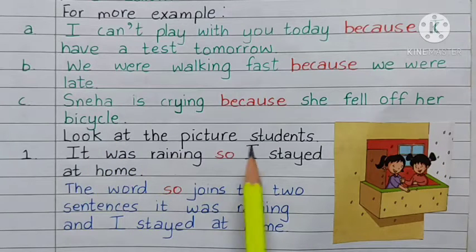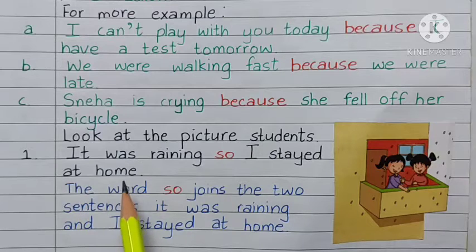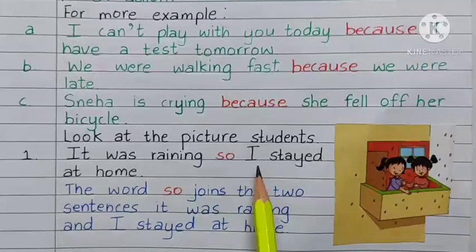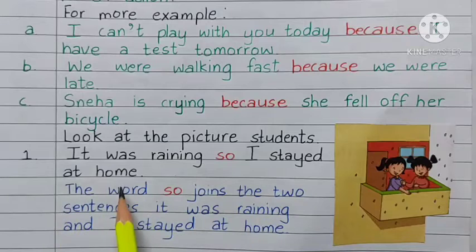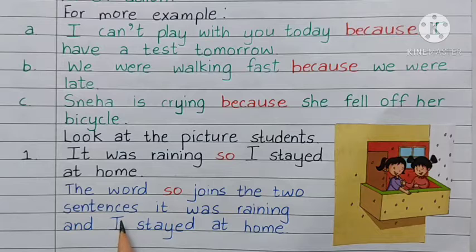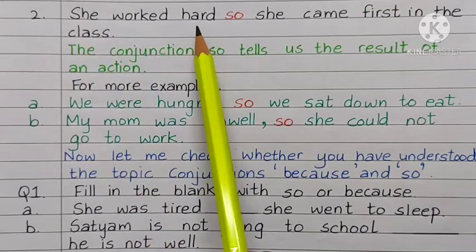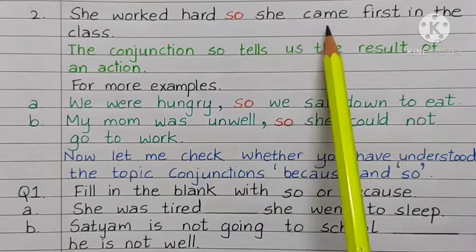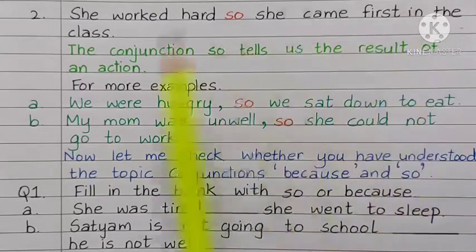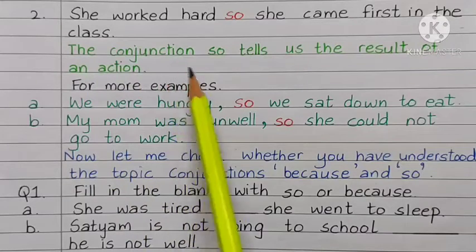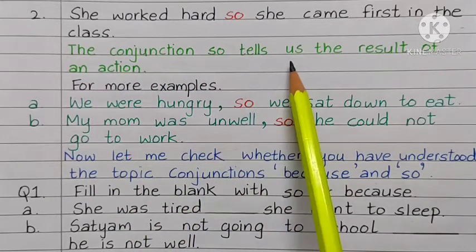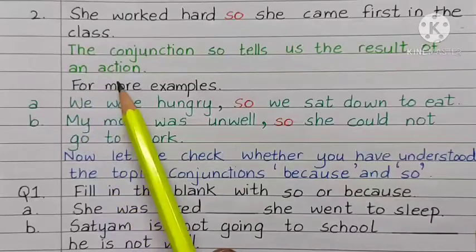Look at the picture, students. It was raining, so I stayed at home. The word 'so' joins the two sentences: it was raining, and I stayed at home. She worked hard, so she came first in the class. The conjunction 'so' tells us the result of an action.